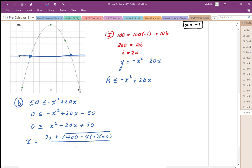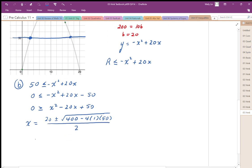And that's all over 2. Simplifying this out, we end up with 20 plus minus square root of 400 minus 200, which is 200. That's all over 2. We can factor out the perfect square. And this simplifies to 10 plus minus 5 root 2.